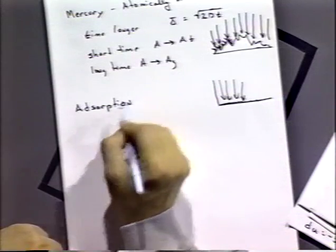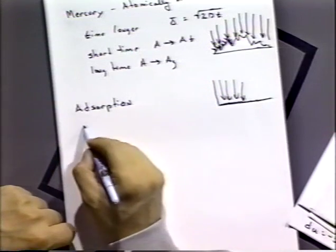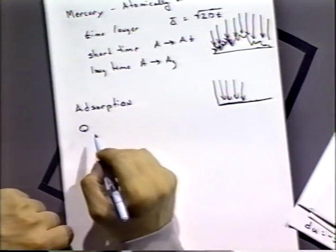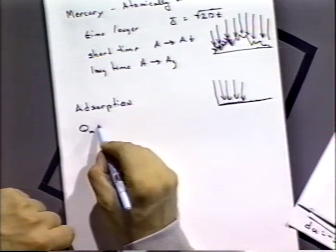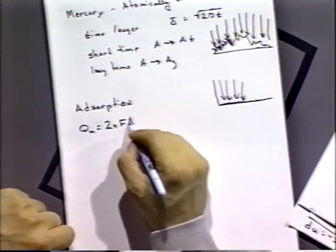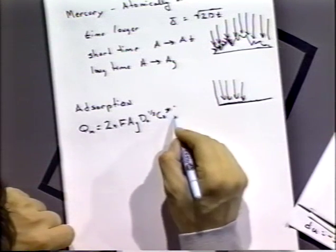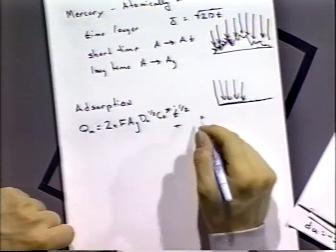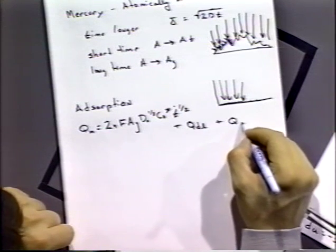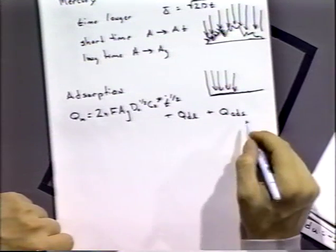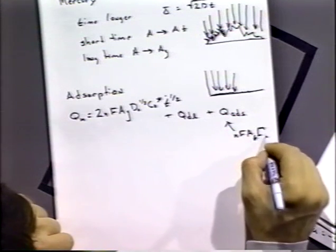Actually, a better way to do that is to measure what they call an absorption. We already said that just by looking at the Cottrell, the chrono-coulometry experiment, we can get absorbed amounts. So Q, the measured amount of charge, is going to be equal to 2 times NFA geometric, D0, C0 star, T to the one-half, plus terms that are due to the double-layer charging, plus what we're really interested in is the charge due to the adsorbed molecule.